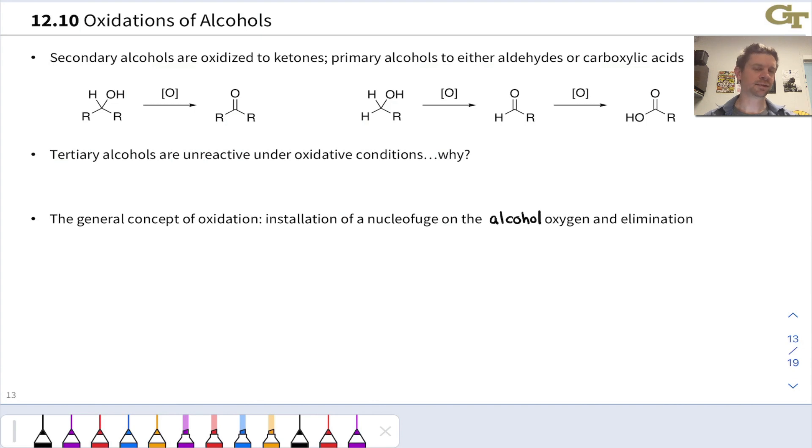We've seen that oxidation reactions, roughly speaking, can be thought of as the elimination of the elements of dihydrogen from the substrate. When we eliminate H2 from an alcohol, we end up with a CO double bond and a carbonyl compound. These reactions tend to be mechanistically more complex than reduction reactions, because we can't just eliminate H minus from alcohol.